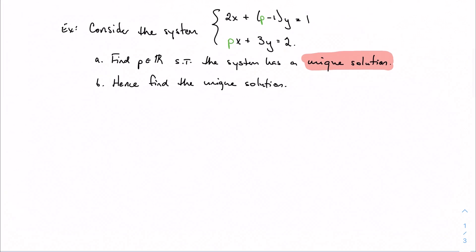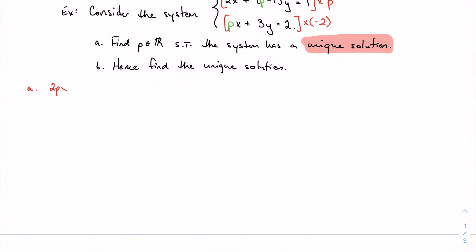I think the best approach here is elimination — substitution could get complicated. We'll multiply the first equation by P and the second equation by negative two. That gives 2Px plus P² (distributing P) equals P, and negative 2Px minus 6y equals negative 4. Lining up variables and combining, the 2Px terms cancel, leaving P² minus P minus 6y equals P minus 4.